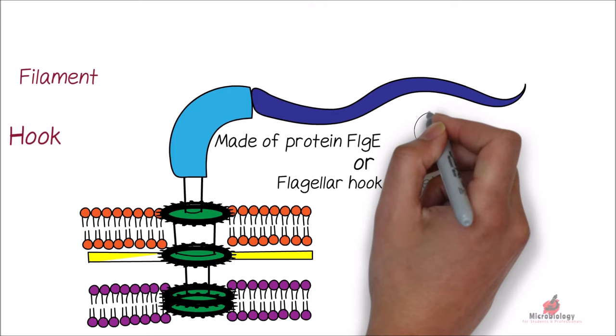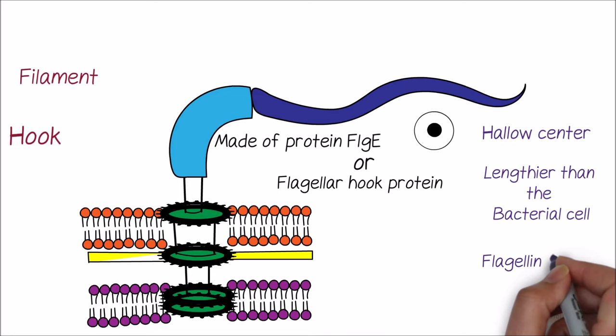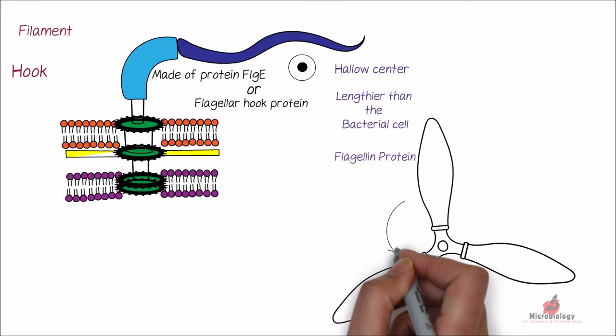Filament is a helical rod with hollow center and is usually lengthier than the bacterial cell. It is composed of flagellin protein. The main function of filament is to act as propeller and drive the bacteria.